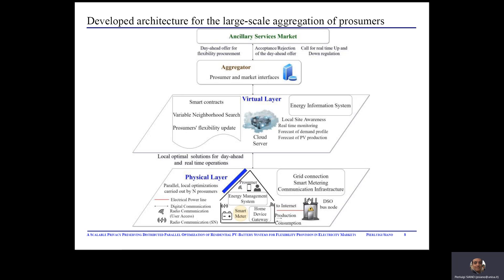The layered architecture consists of a physical layer and a virtual layer. The physical layer provides grid connections, smart metering, and communication to all prosumers. The virtual layer includes an energy information system allowing local site awareness based on real-time monitoring and tools for forecasting of photovoltaic production and load demand. By accessing the virtual layer, consumers can exchange only some privacy-preserving information related to their local optimal solutions and their power flexibility contributions to fulfill the global constraints of the optimization problem. The virtual layer is based on distributed ledger technology and smart contracts to achieve both data and real-time distributed parallel optimizations while preserving the privacy of all prosumers.